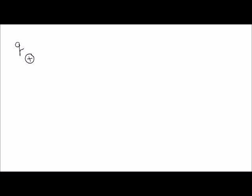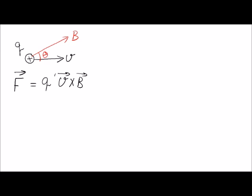Let's say we have a charge, a positive charge Q — sometimes called a test charge. This charge is moving with velocity V, which is the velocity vector making an angle theta with the magnetic field B. In this region, the charge will experience a force F, equal to Q multiplied by V cross B, the cross product of the velocity vector and the magnetic field vector. This is the vector form of the force.